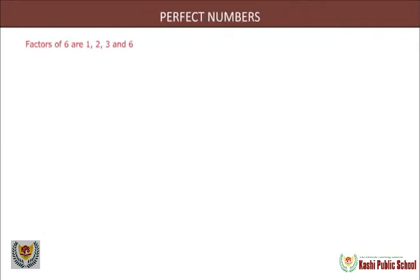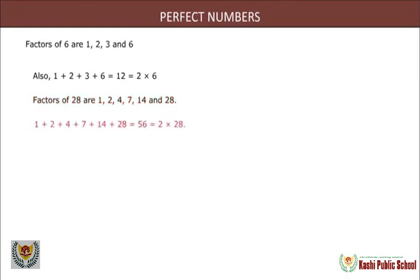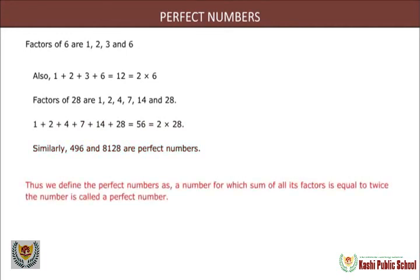Perfect numbers: the factors of 6 are 1, 2, 3 and 6, and 1+2+3+6=12=2×6. The sum of all factors of 6 is twice the number 6. All the factors of 28 are 1, 2, 4, 7, 14 and 28, and 1+2+4+7+14+28=56=2×28. Similarly, 496 and 8128 are also perfect numbers. Thus a perfect number is defined as a number for which the sum of all its factors is equal to twice the number. Therefore 6, 28, 496 and 8128 are perfect numbers.